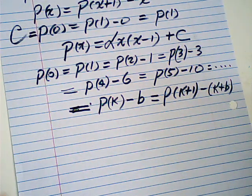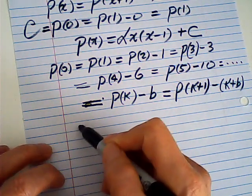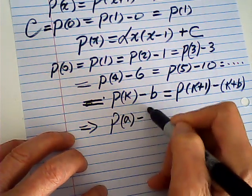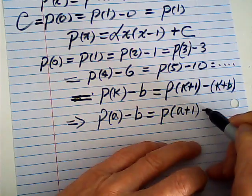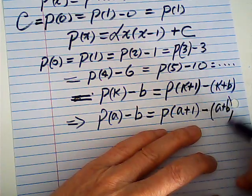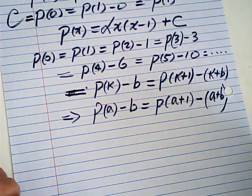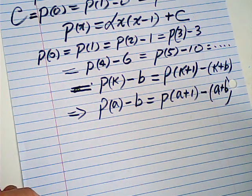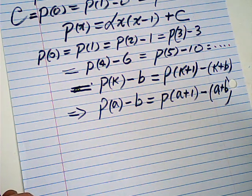Therefore, in general, P(A) minus B is equal to P(A+1) minus (A+B). This is what my assumption is. I presume that is the case. I just want to verify.